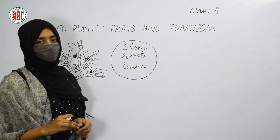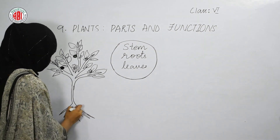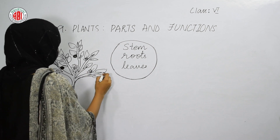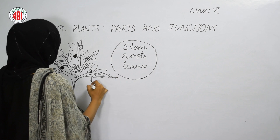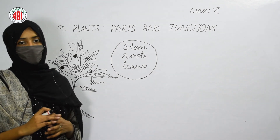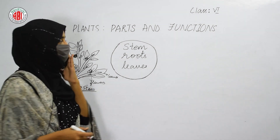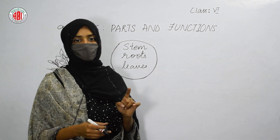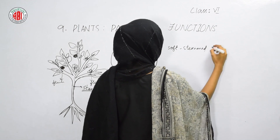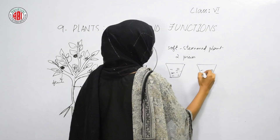Now we will discuss the stem. The stem is a part of the plant that helps carry water from the roots to the different parts of the plant. The stem bears branches, and these branches bear leaves, flowers, and fruit. The stem makes the plant stand erect and helps the plant receive water absorbed by the roots. To understand the role of a stem, we will do one activity: take a soft-stemmed plant and cut the stem into two pieces.